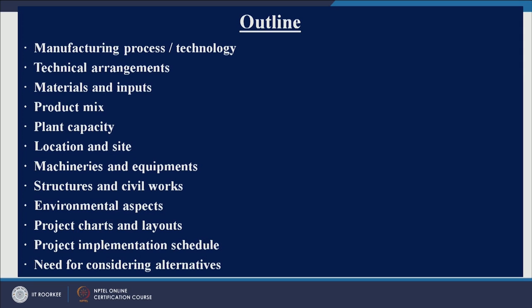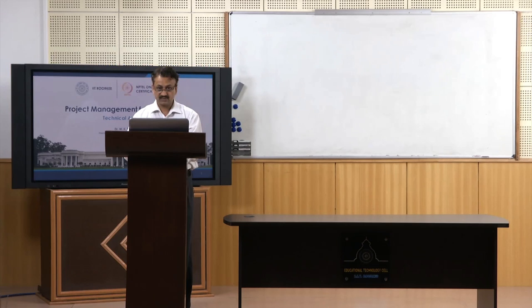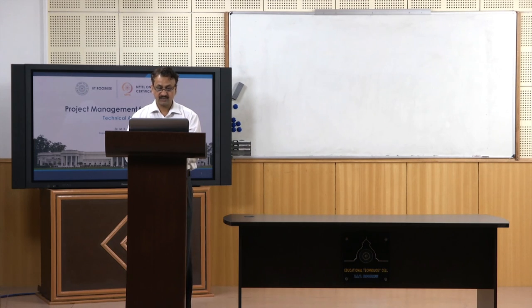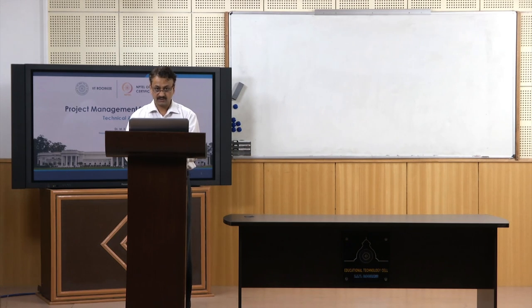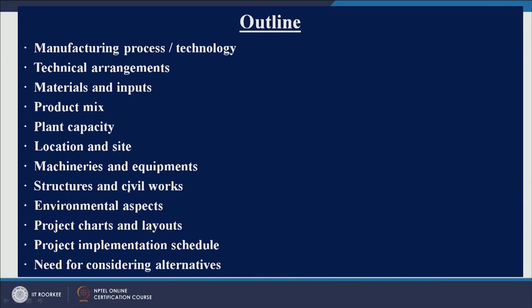Product mix is something wherein you need to decide how many products you want. You cannot manufacture all the products required by customers because of several constraints, so you need to decide on product mix. Plant capacity is related to technology — if you are using better technology you will have a better plant capacity. We will also cover location and site selection, machineries and equipment, and structures and civil works.